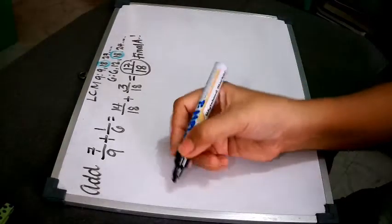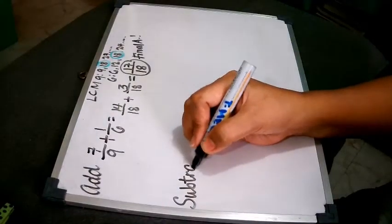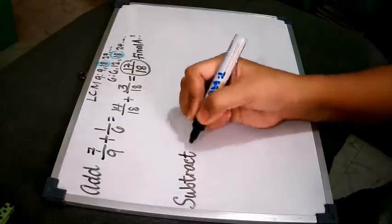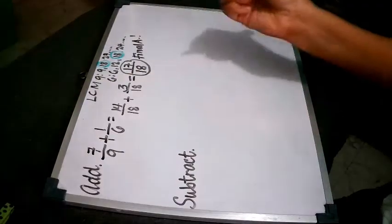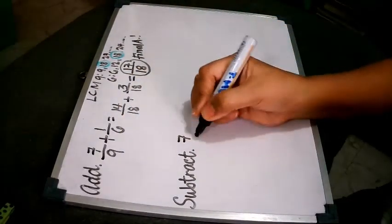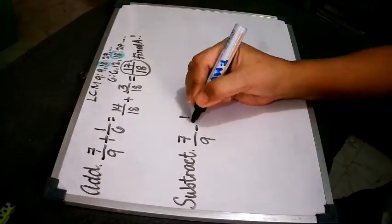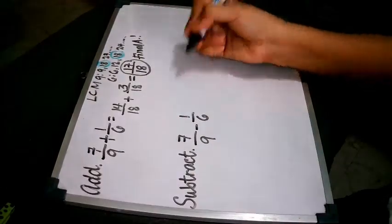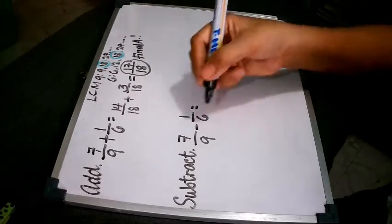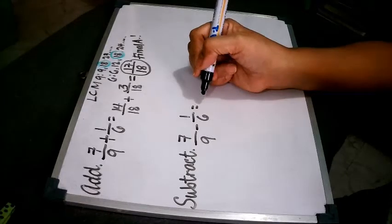So let's proceed now to subtraction. How do we subtract fractions that are dissimilar? We will use the same fractions here. 7/9 minus 1/6. So again, we cannot subtract these fractions if they are not the same.